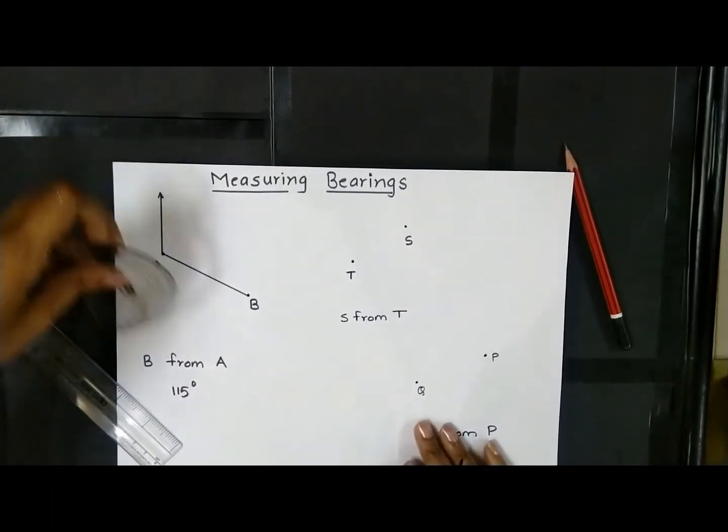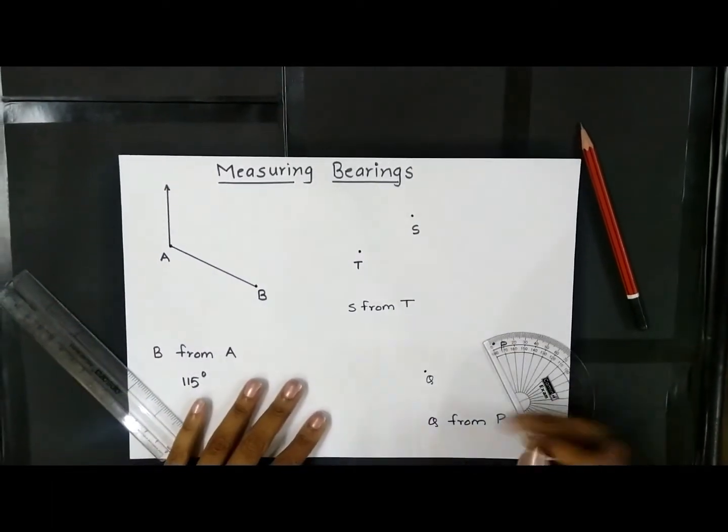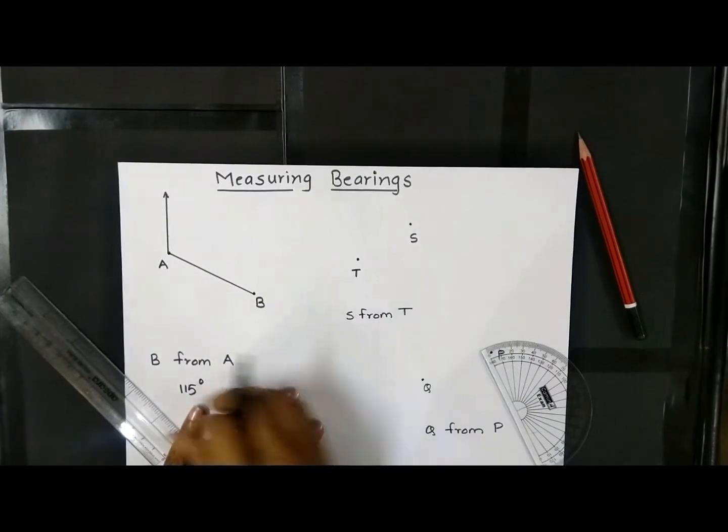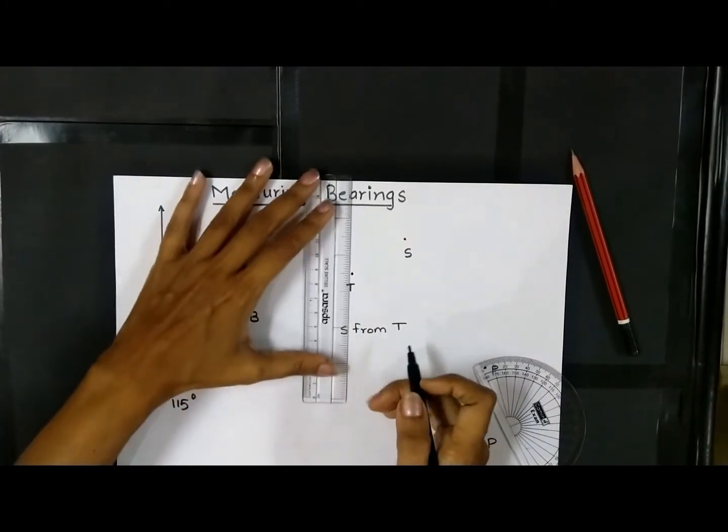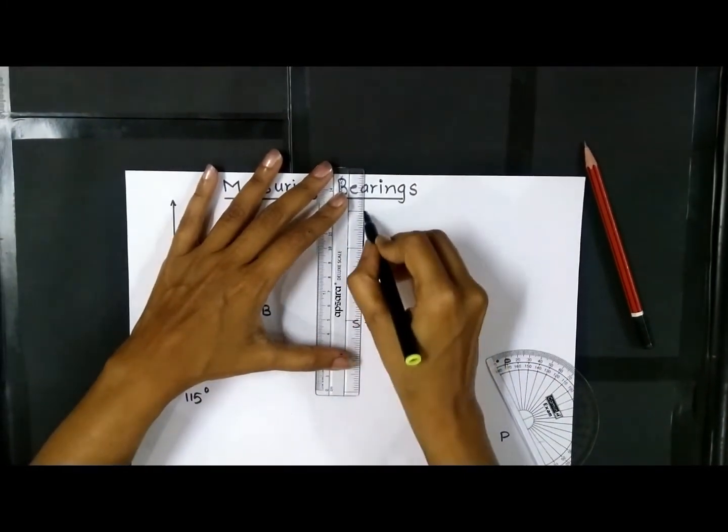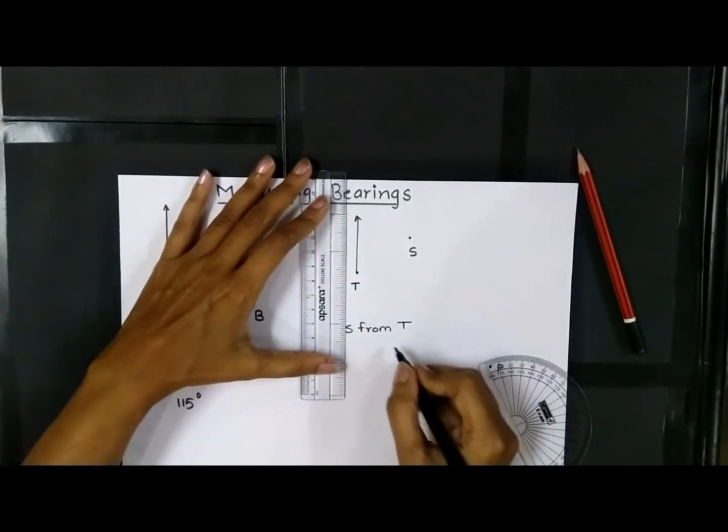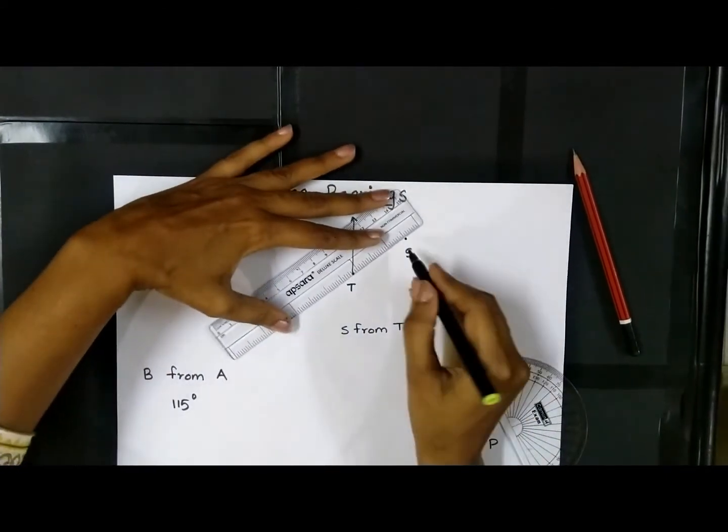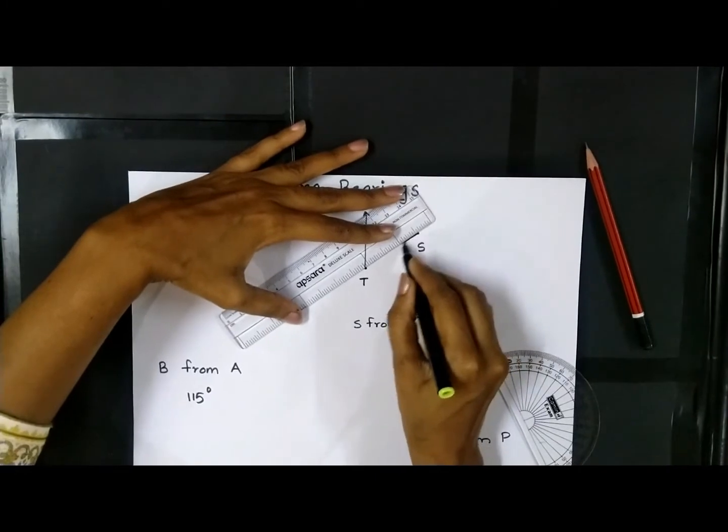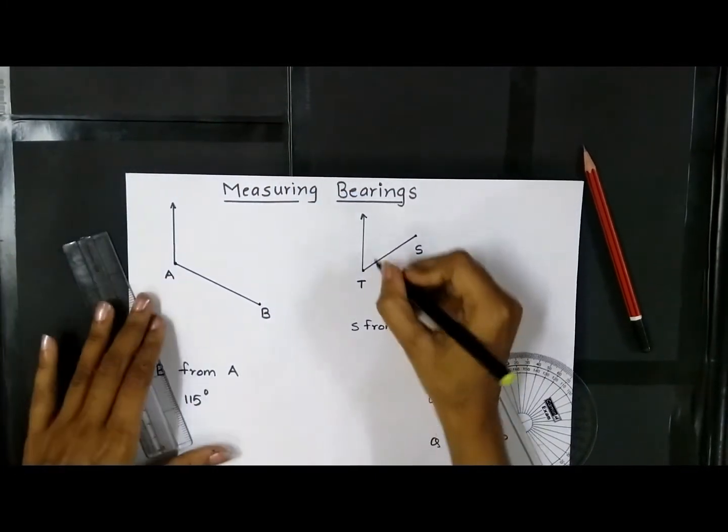The next bearing that I am going to measure is bearing of S from T. For that reason I have to draw a perpendicular north at T because it's bearing from T. Then join T and S and then measure this angle which is in a clockwise direction.